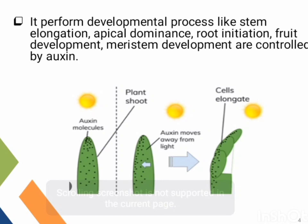Auxin is a hormone. In this diagram, we can see the part of the plant which contains Auxin molecules. We have discussed that Auxin molecules are involved in phototropic effects and phototropic responses. When it comes to light, Auxin moves away from light, and the result is that the shaded side shows elongation.